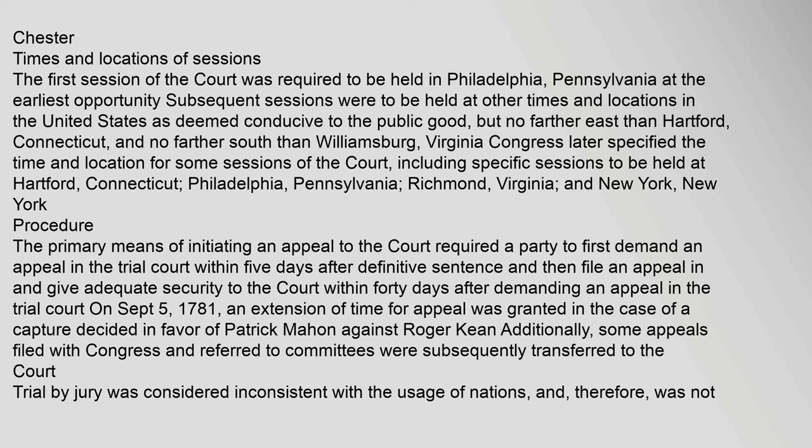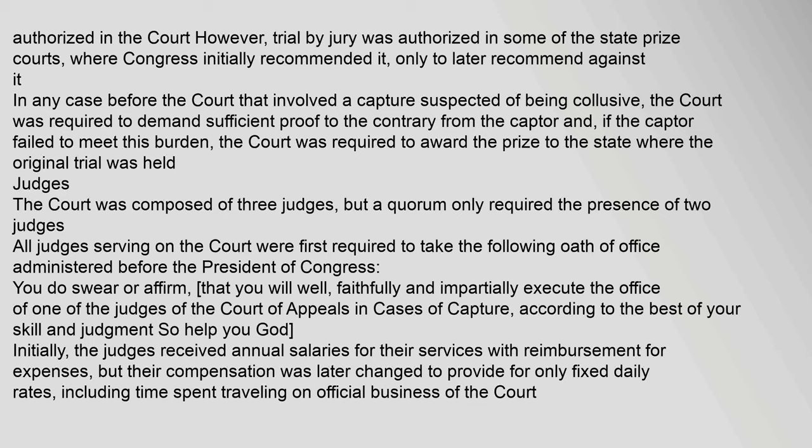The primary means of initiating an appeal required a party to first demand an appeal in the trial court within five days after definitive sentence, then file an appeal and give adequate security to the Court within 40 days. Trial by jury was considered inconsistent with the usage of nations and was not authorized in the Court. However, trial by jury was authorized in some state prize courts. In any case before the Court involving a capture suspected of being collusive, the Court was required to demand sufficient proof to the contrary from the captor; if the captor failed to meet this burden, the Court was required to award the prize to the state where the original trial was held.